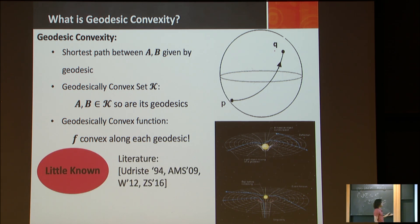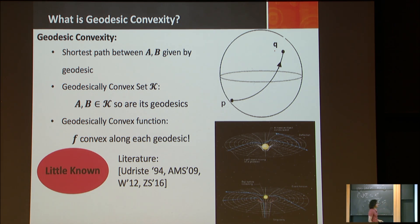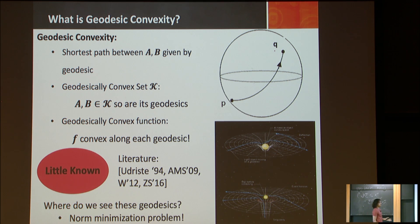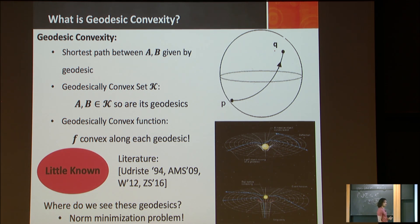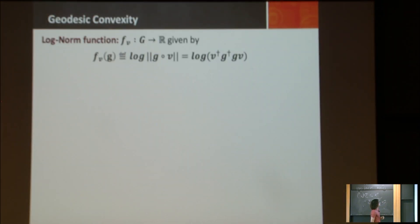This is a more general setting, and very little is known here compared to general convex optimization. For references, there's a book from Udriste and AMS, and recent work of Zan and Suvrit and many others. We'll see that the norm minimization problem is a geodesically convex problem — both the domain and the function are geodesically convex.